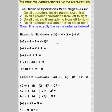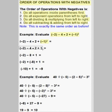First we're going to evaluate negative 2 minus 4 times 2 plus negative 1 squared. The first thing we do is the exponent operation: negative 1 squared is negative 1 times negative 1, which is positive 1. So this becomes negative 2 minus 4 times 2 plus positive 1. Next we do the multiply before we add or subtract. 4 times 2 is 8, so we have negative 2 minus 8 plus 1.